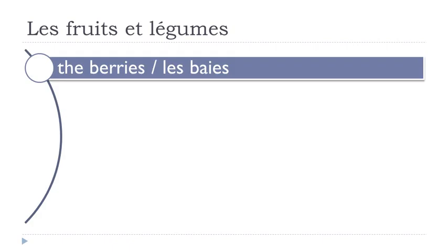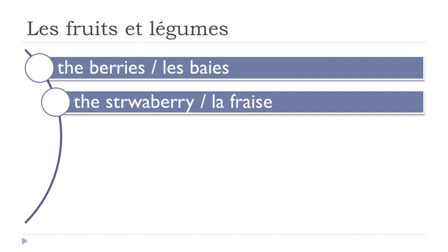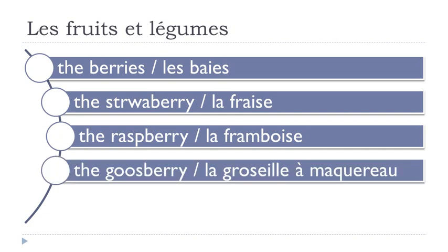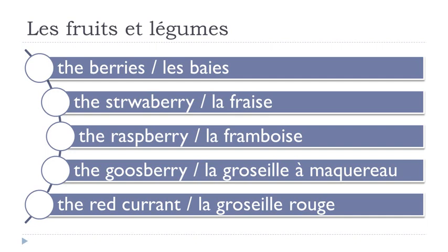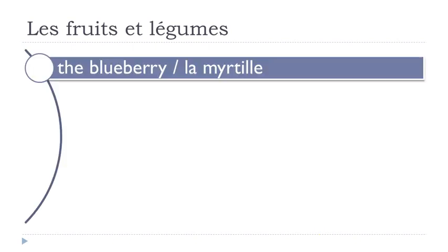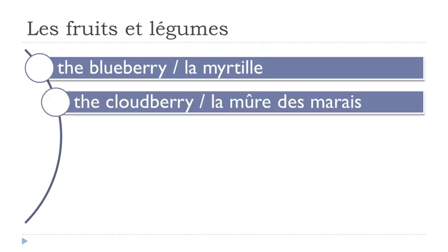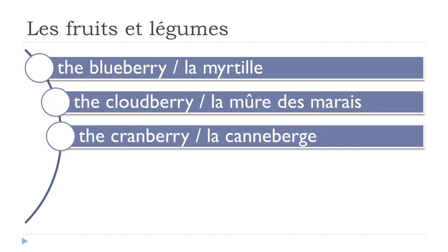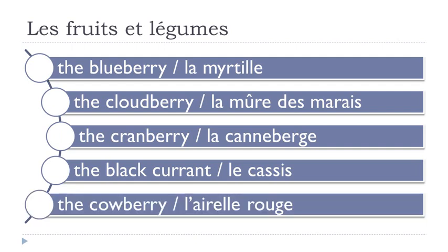Les baies — berries: la fraise, la framboise, la groseille à maquereau, la groseille rouge, la myrtille, la mûre des marais, la canneberge, le cassis, l'airelle rouge.